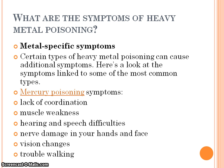Certain types of heavy metal poisoning can cause additional specific symptoms. Mercury poisoning symptoms include lack of coordination, muscle weakness, hearing and speech difficulties, nerve damage in your hands and face, vision changes, and trouble walking.